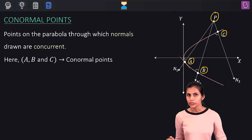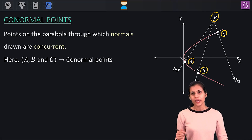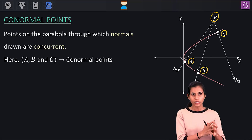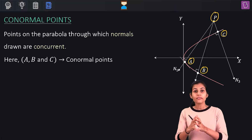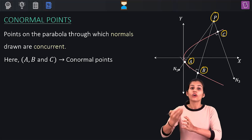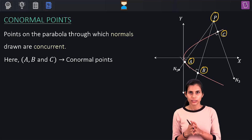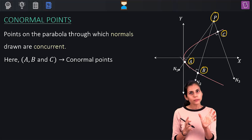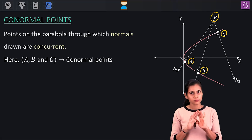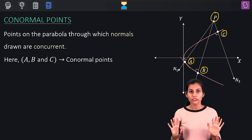Points are co-normal only when the normals at them are concurrent. Co-normal points, concurrent normals — that's how you can remember it.